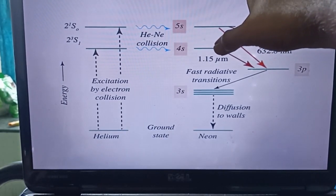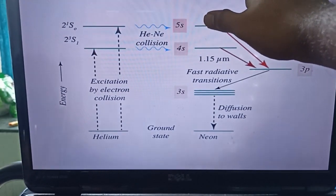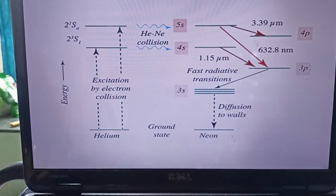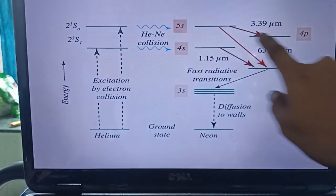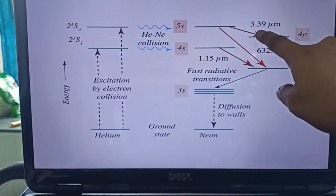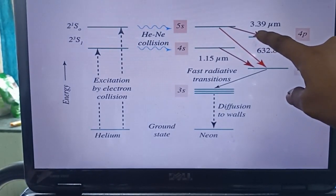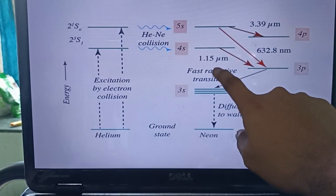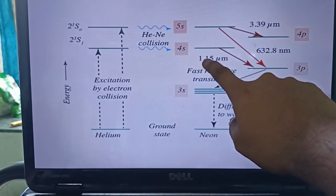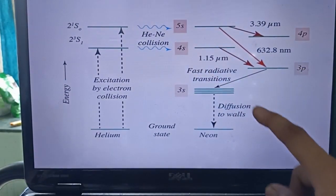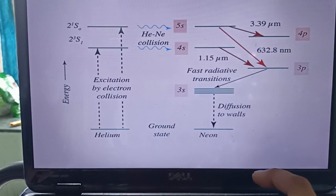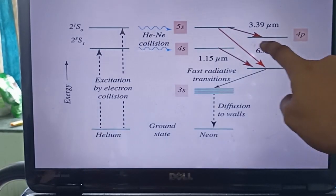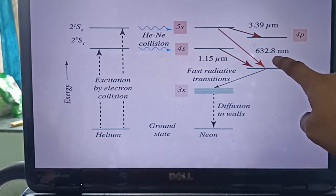Nothing can remain in these energy states for a longer time and it needs to decay. When the Neon atom loses energy and goes from 5s energy state to 4p energy state, it releases radiation of 3.39 micrometer, which is in the infrared radiation range. When Neon atom goes down from 4s state to 3p state, it releases 1.15 micrometer radiation, which is in the infrared region. But when the Neon atom goes from 5s state to 3p state, it releases 632.8 nanometer of visible wavelength, which is in the red region.